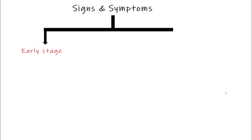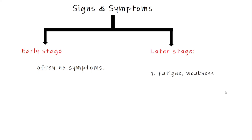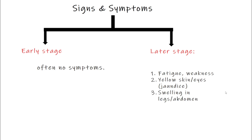Now let's look at the signs and symptoms of liver cirrhosis. In the early stages, many people don't feel anything at all — no symptoms. That is why it is often called a silent disease at first. In later stages, people may feel very tired or weak all the time. The skin and eyes may turn yellow — this is called jaundice — and it happens when the liver can't process bilirubin properly. Swelling in the legs or belly is also common due to fluid buildup.